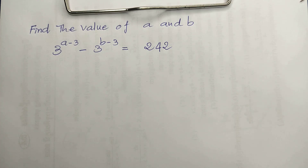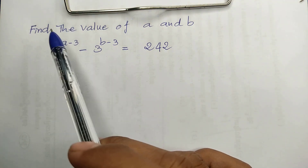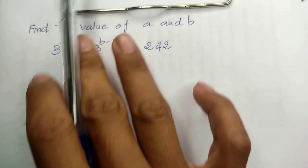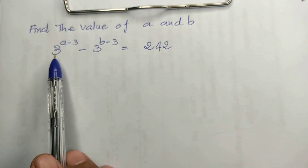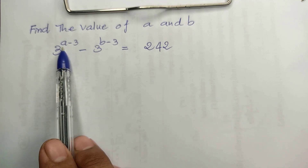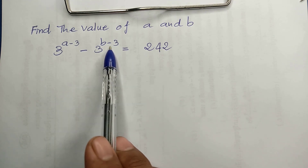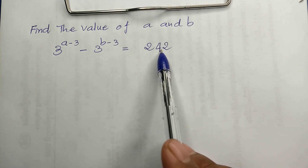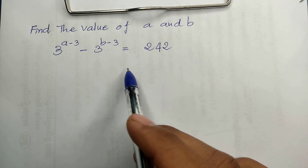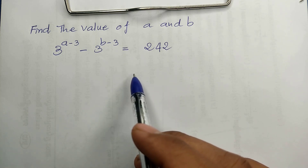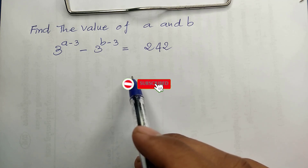Hello everyone, welcome to my YouTube channel. Today I have one exercise. Find the values of a and b: 3^(a-3) minus 3^(b-3) equals 142. If you know how to solve this, please do it. If you don't, keep watching my videos from beginning to end, and don't forget to subscribe my channel for more exciting videos.